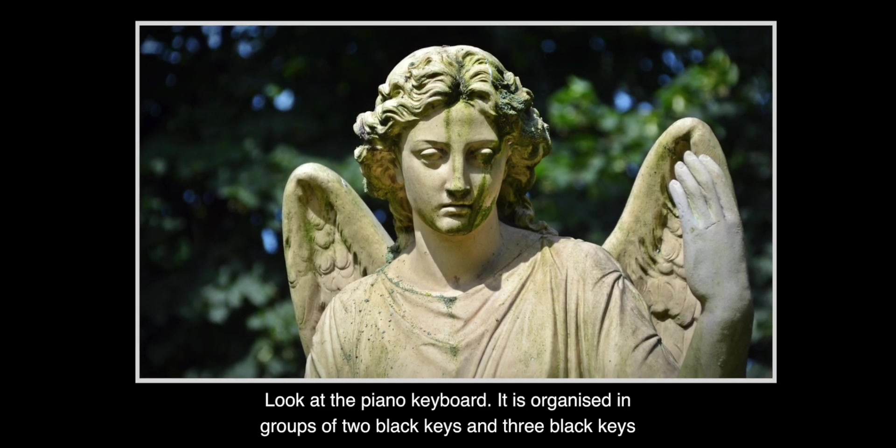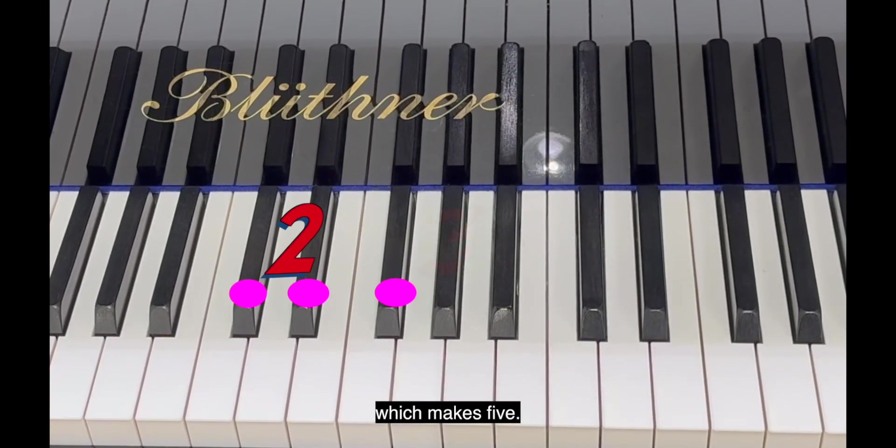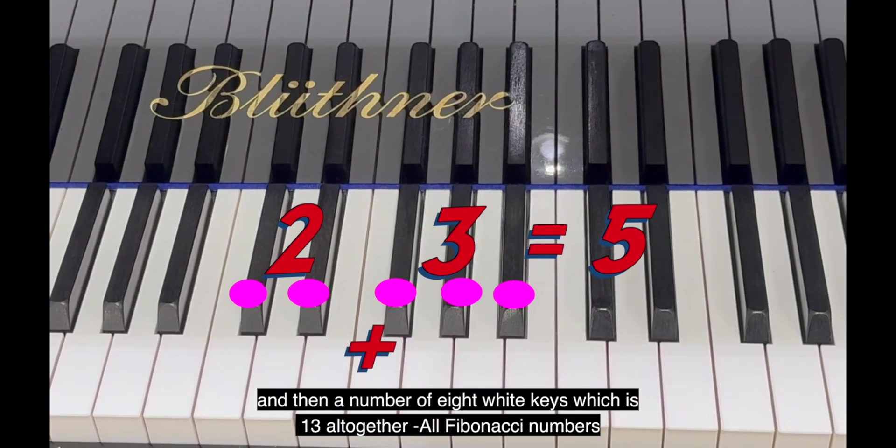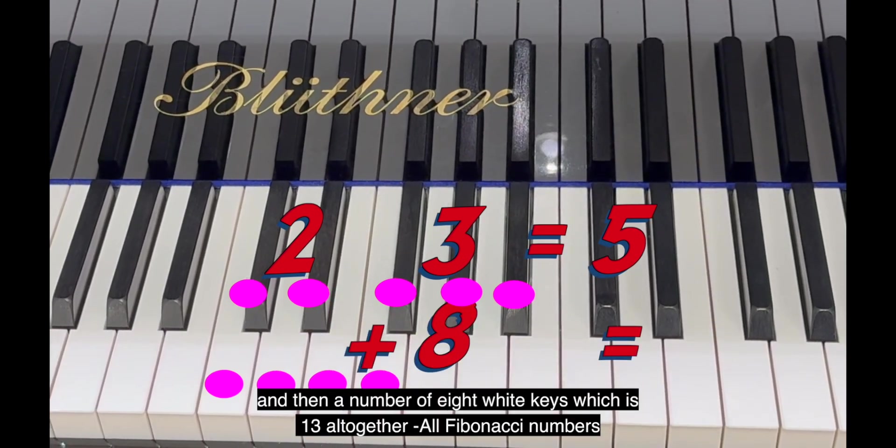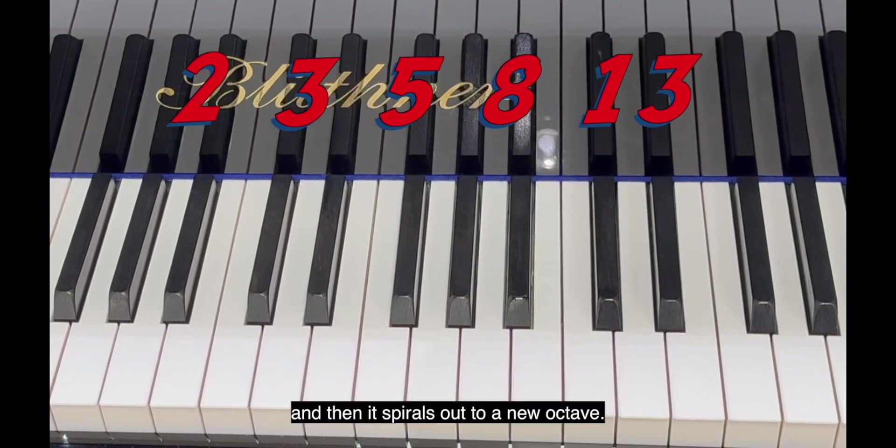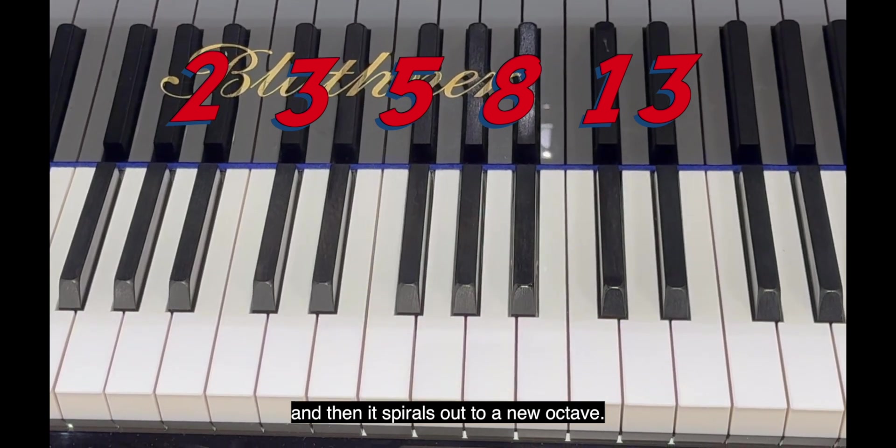Look at the piano keyboard. It is organized in groups of two black keys and three black keys, which makes five, and then a number of eight white keys, which is thirteen altogether—all Fibonacci numbers. And then it spirals out to a new octave.